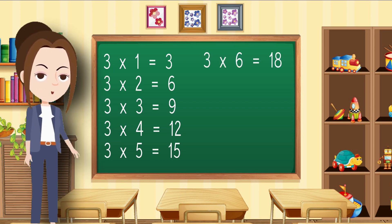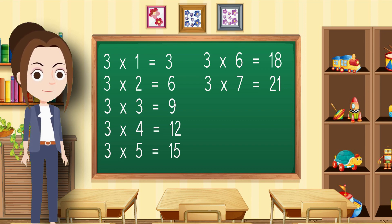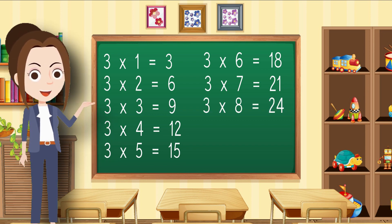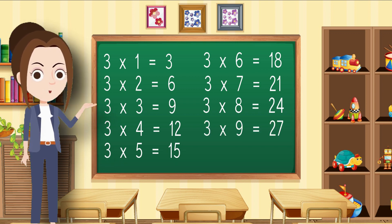Three sevens are twenty-one, three eights are twenty-four, three nines are twenty-seven.